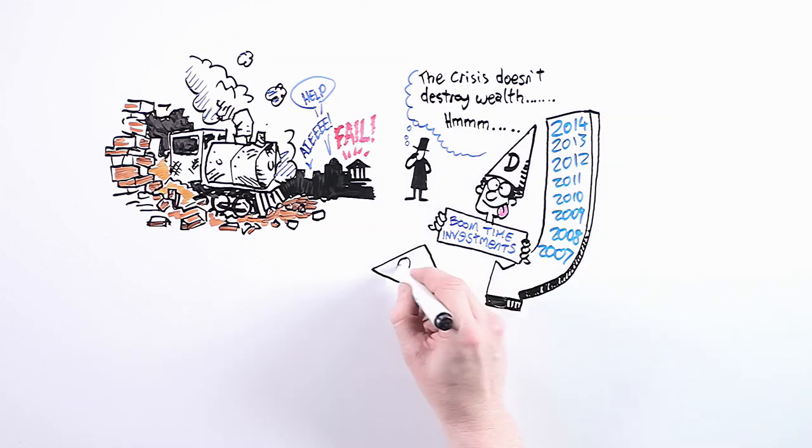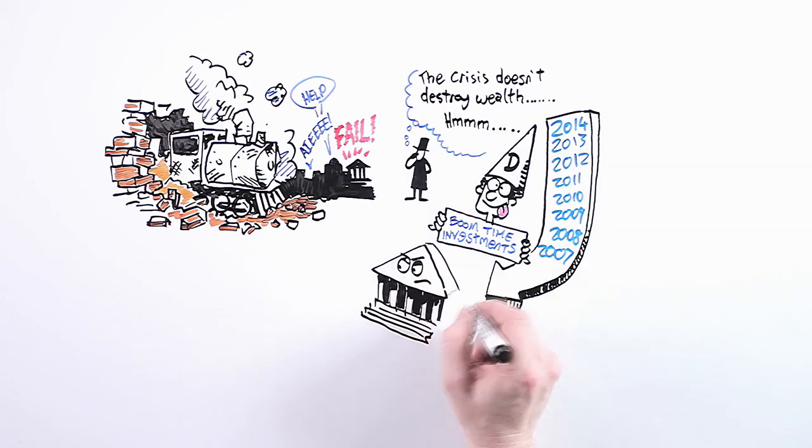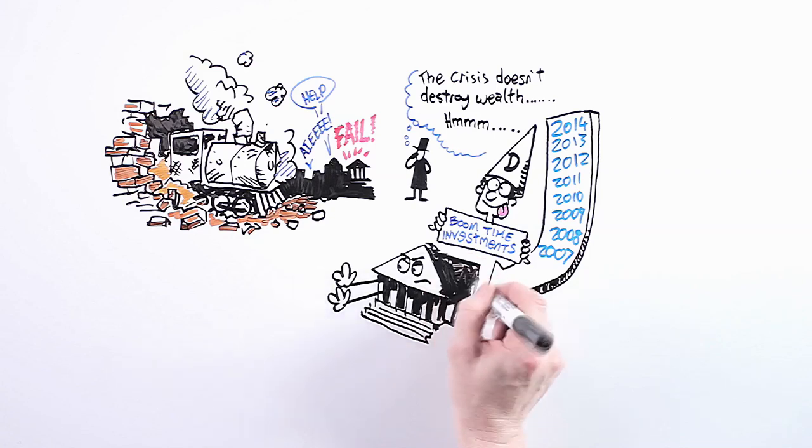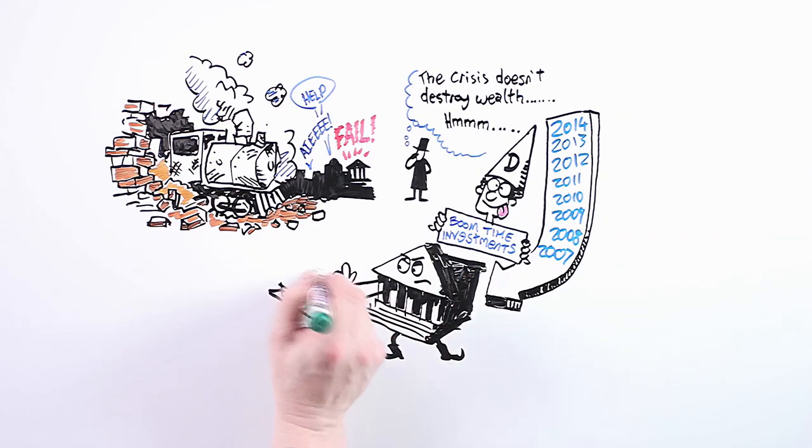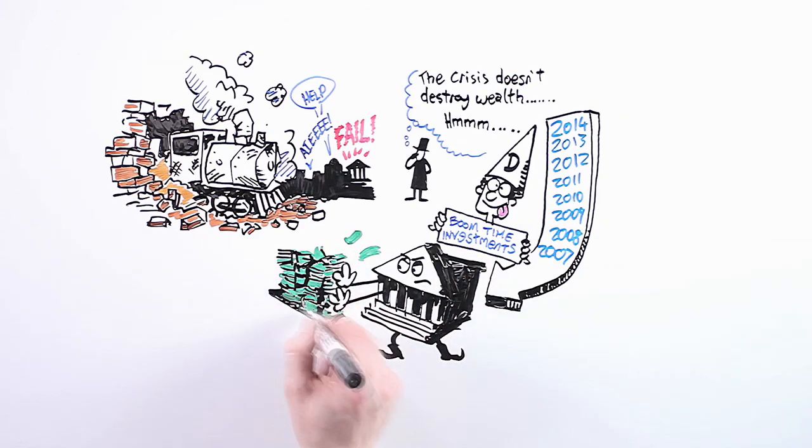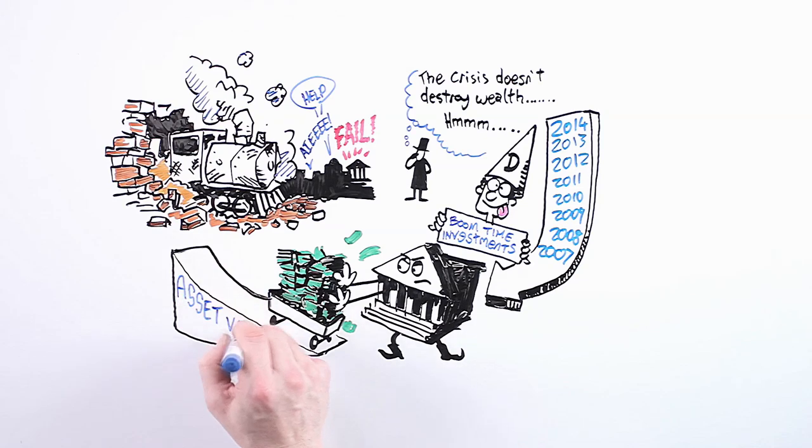So banking crises, they don't start the day the market collapses, but they actually begin years before when the banks begin to borrow and lend recklessly, using other people's money to ramp up asset values.